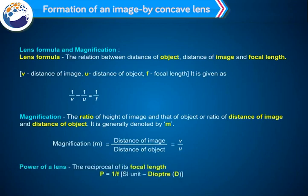Power of a lens: the reciprocal of its focal length. P = 1/f. The SI unit of power of a lens is the dioptre, denoted by D.